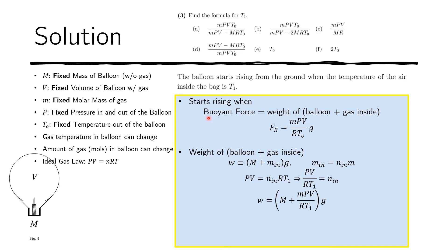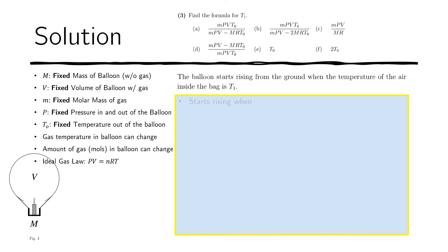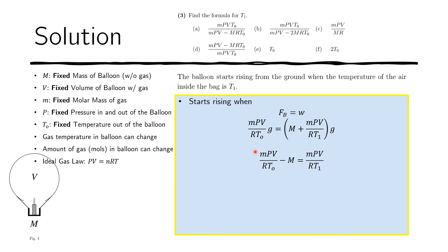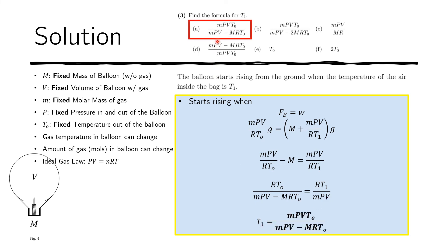The balloon starts rising when the buoyant force equals the total weight. Setting them equal and cancelling the g's, we manipulate the expression: moving M to the other side and flipping the numerator and denominator to isolate T₁. The R's cancel, and finally we obtain T₁ = M · R · T₀ / (mPV / T₀ · ... ), which simplifies to T₁ = mPVT₀ / (mPV − MRT₀). This matches the expected answer choice.